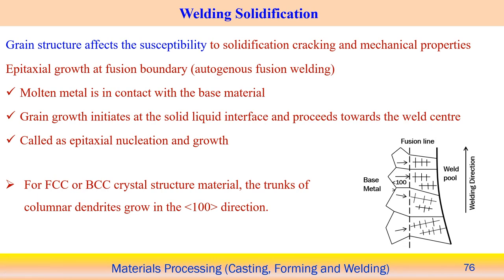Grain structure affects susceptibility to solidification cracking and mechanical properties. We look into what type of grain structure usually forms associated with the welding process. One is the epitaxial growth that usually occurs at the fusion boundary, usually in autogenous fusion welding, meaning we are not mixing any other material during the welding process. That is called the autogenous fusion welding process, where the molten metal is in contact with the base metal.